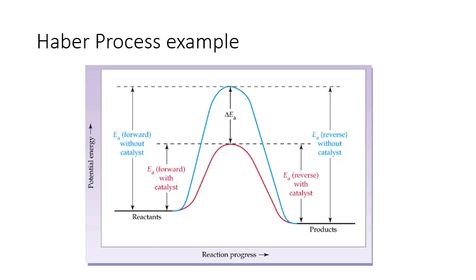Looking at the Haber process example from last year, the activation energy of the forward and backward reactions are larger compared to the activation energy of the forward reaction with a catalyst, and the activation energy of the reverse reaction with a catalyst. The reaction is an exothermic process. Looking at the red line, the activation energy for the overall process is larger without a catalyst. With a catalyst, the backward and forward reactions are sped up at the same rate, so there's no effect on the equilibrium.